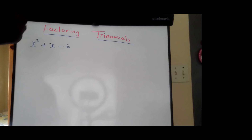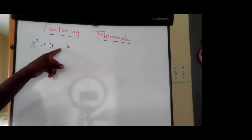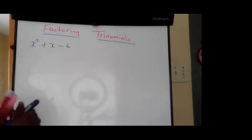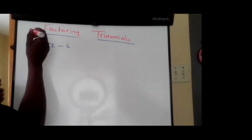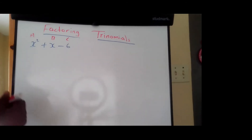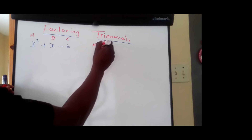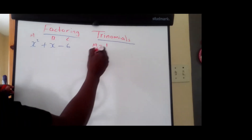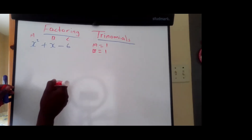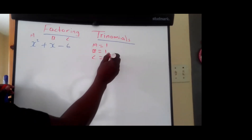So let us do another example. X squared plus X minus 6. And as usual, I am going to label each term. So we have A, B, and C. Since we just have an X squared here, we know that A equals 1. And we have C equal negative 6.